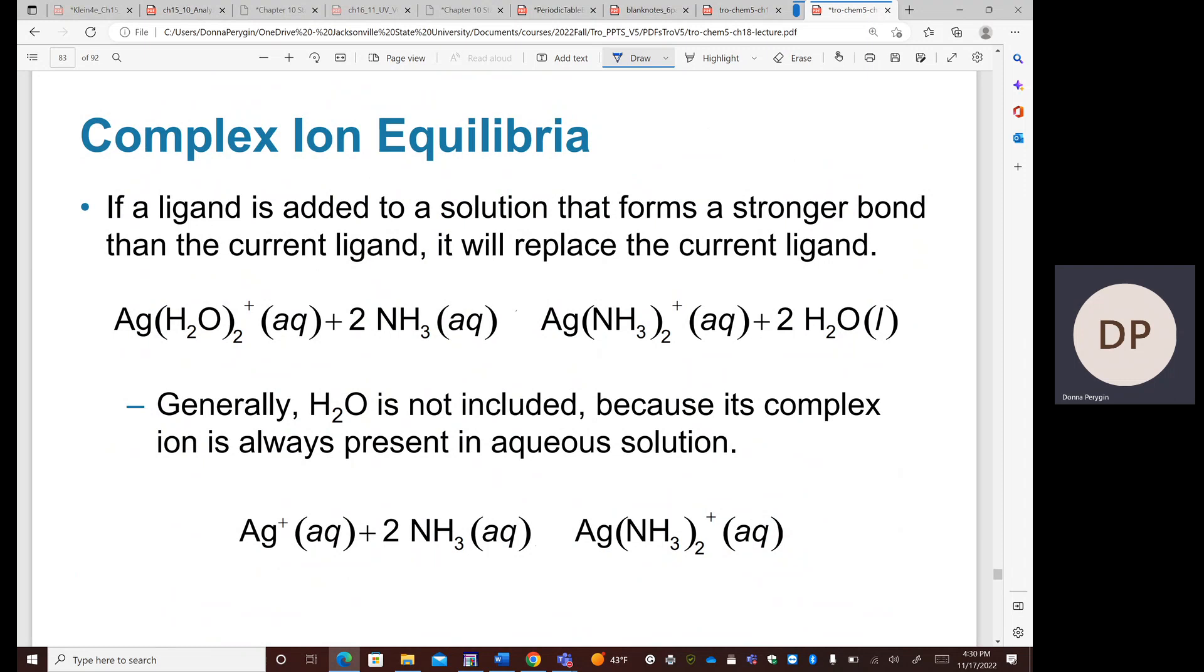These are called complexes, and the silver can become complexed with water. Perhaps we may add another species, such as ammonia, to the solution, and if the silver can form a stronger complex with ammonia, the water surrounding the silver may be displaced by the ammonia.